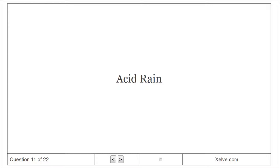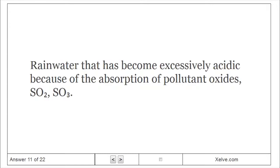Acid Rain: Rainwater that has become excessively acidic because of the absorption of pollutant oxides, SO₂, SO₃.